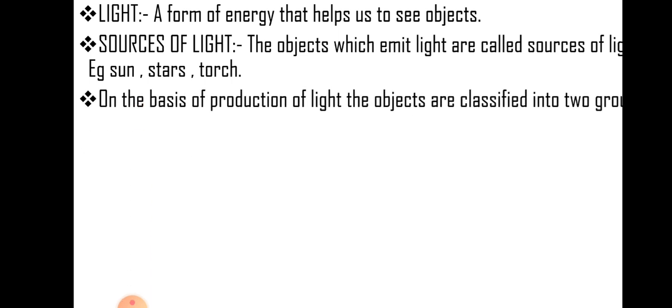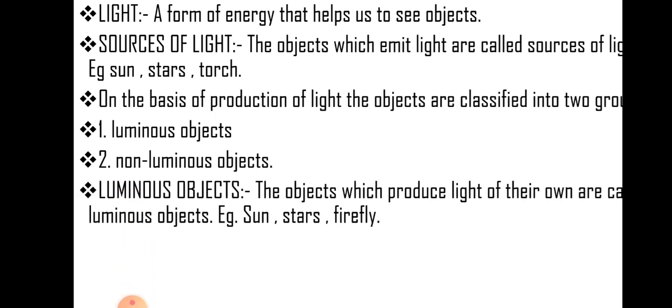On the basis of production of light, the objects are classified into two groups: luminous object and non-luminous object. Luminous objects are the objects which produce light of their own and are called luminous objects. For example, sun, stars, firefly.